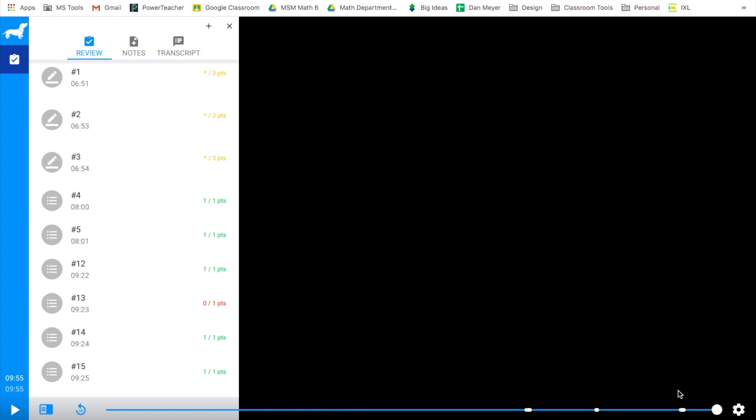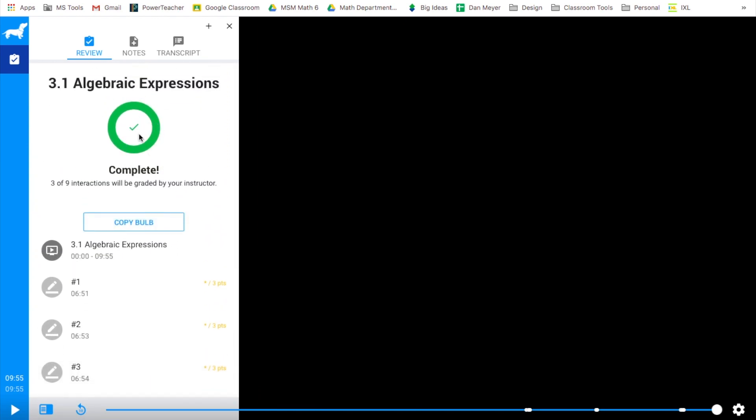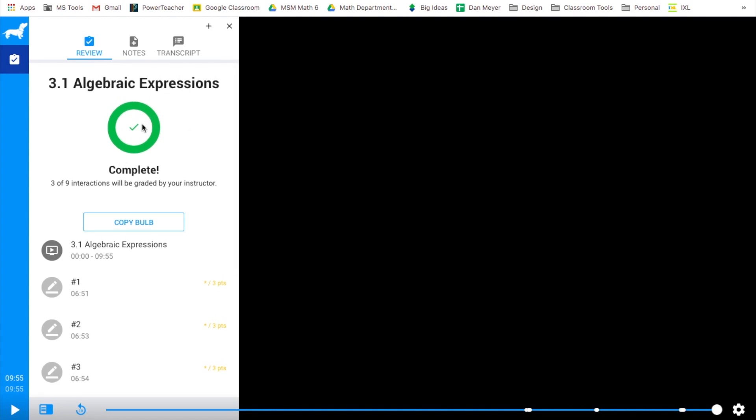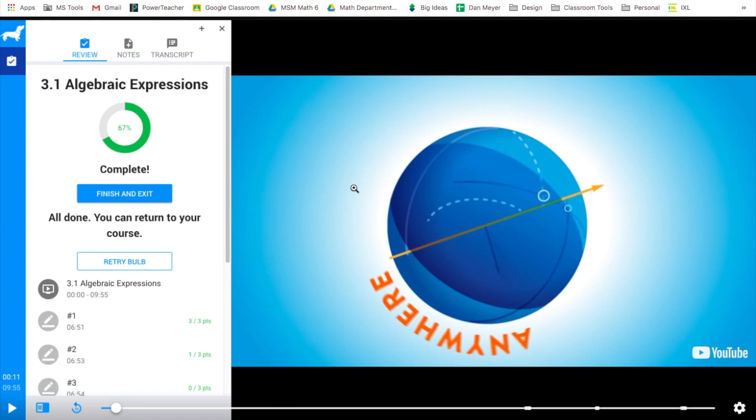It's really important to make sure you go all the way to the end. You saw up there it said bulb complete. Here is a review of everything I've done. I've got the check mark that says complete. If I close down before I got to the end, it's not going to tell me that it's complete. It also says three of the nine interactions are going to be graded by your instructor, which is your teacher. That's really important. On this, you'll see that it doesn't give me the option because I'm a teacher to redo it. But on yours, you might see something that looks a little different. You've completed it. It's all done. You can return to your course. It also might have the option to retry the bulb if you got a lot of questions wrong.